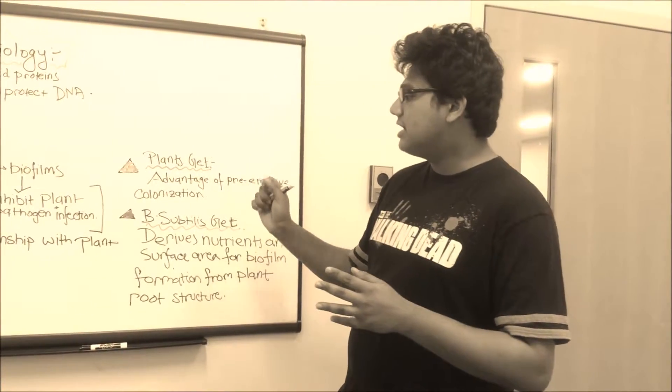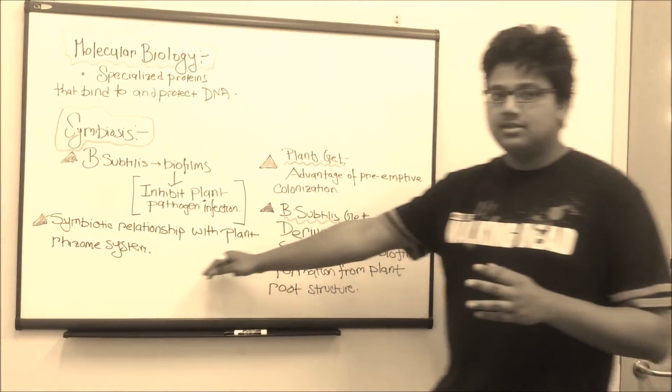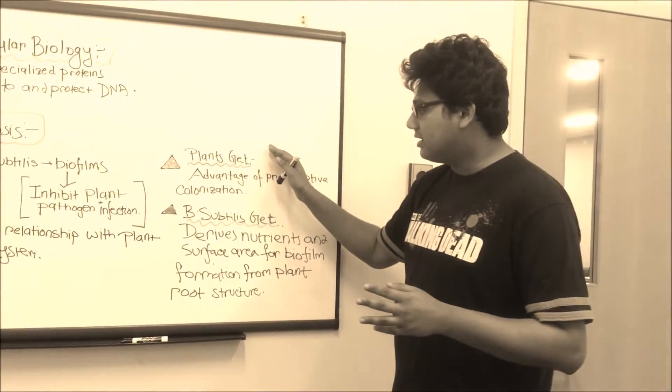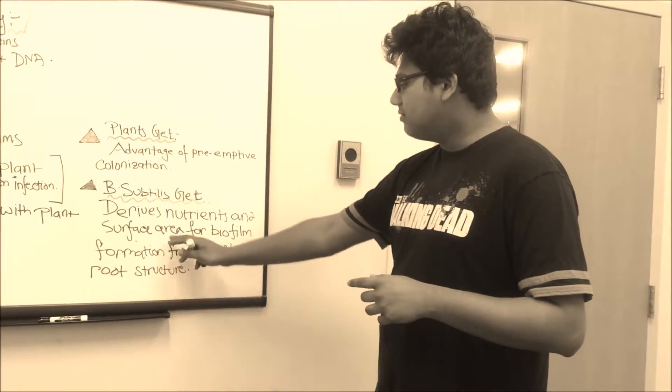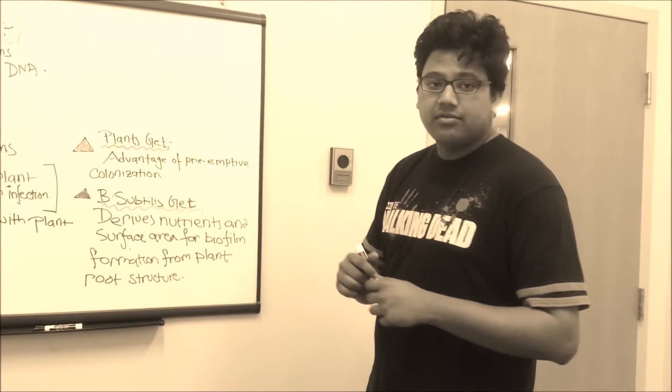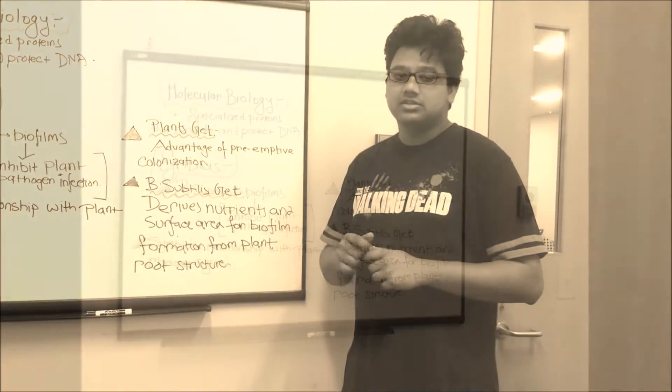Particularly, that spot is taken up in the rhizome system of plants, and that's the benefit plants get. In return, what does B subtilis get? They get nutrients and surface area for the biofilm formation from the plant root structure.